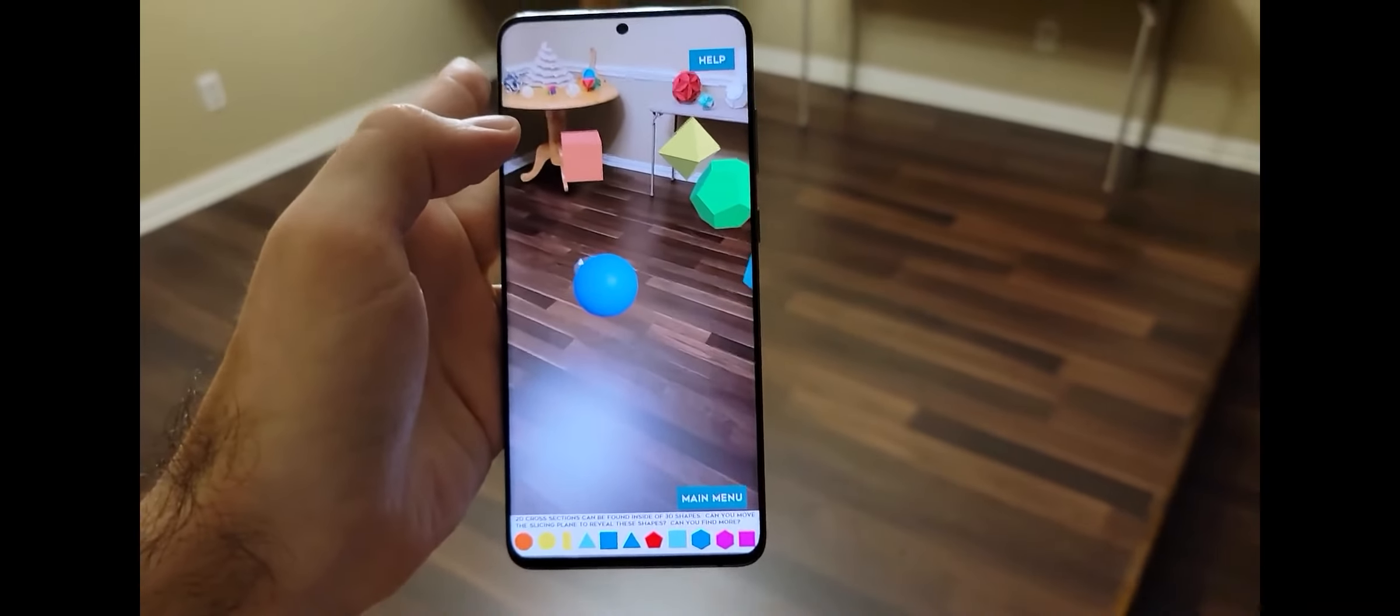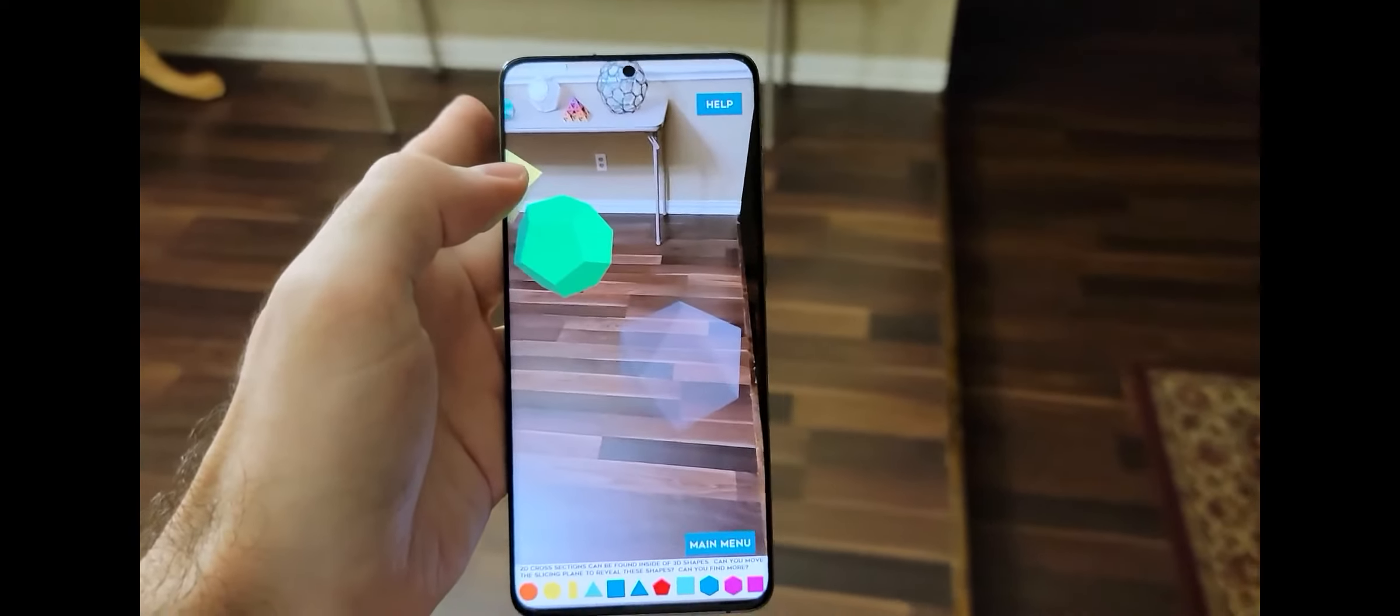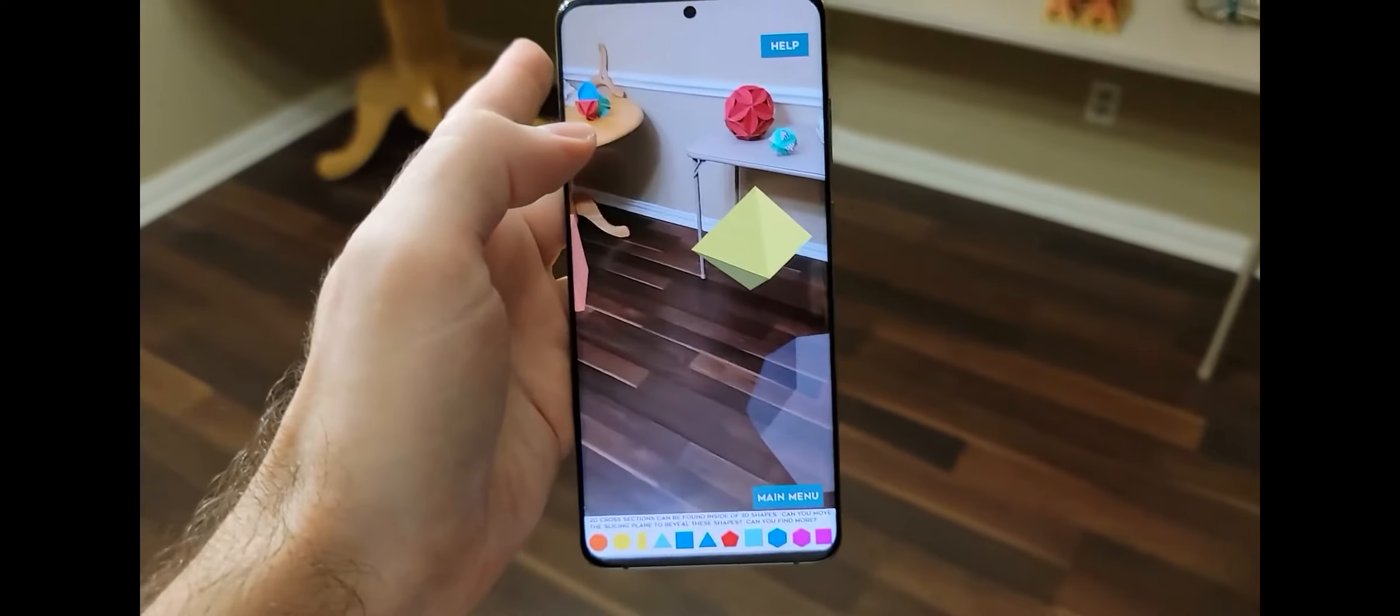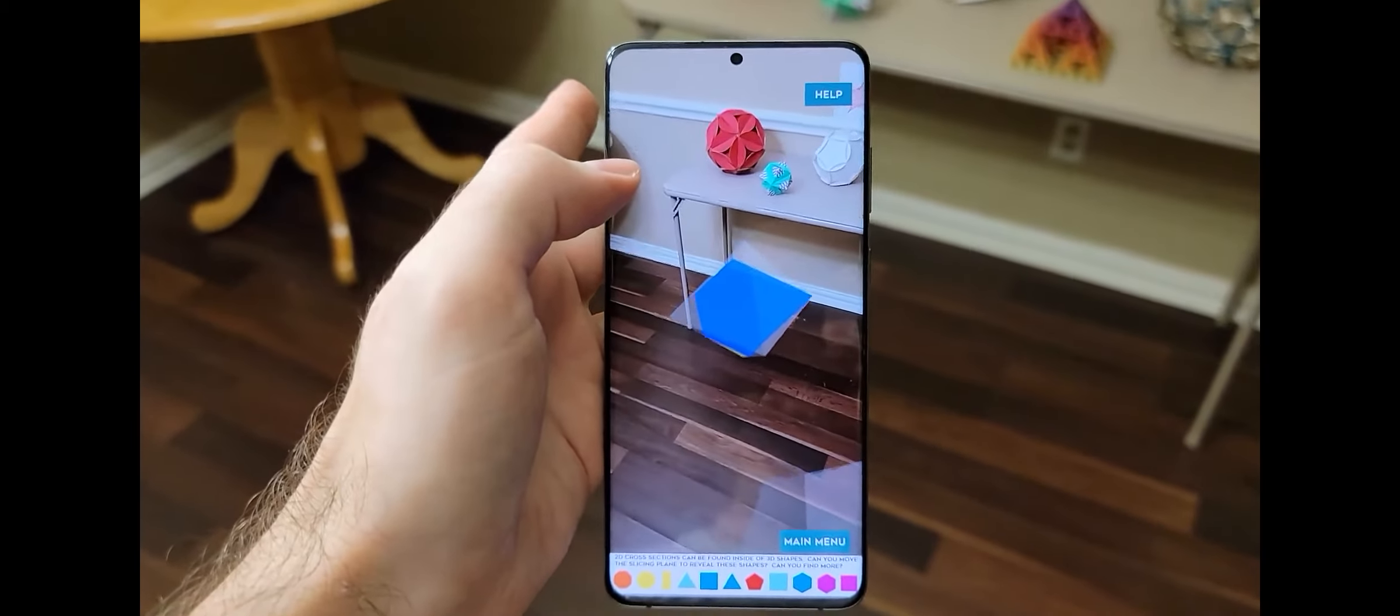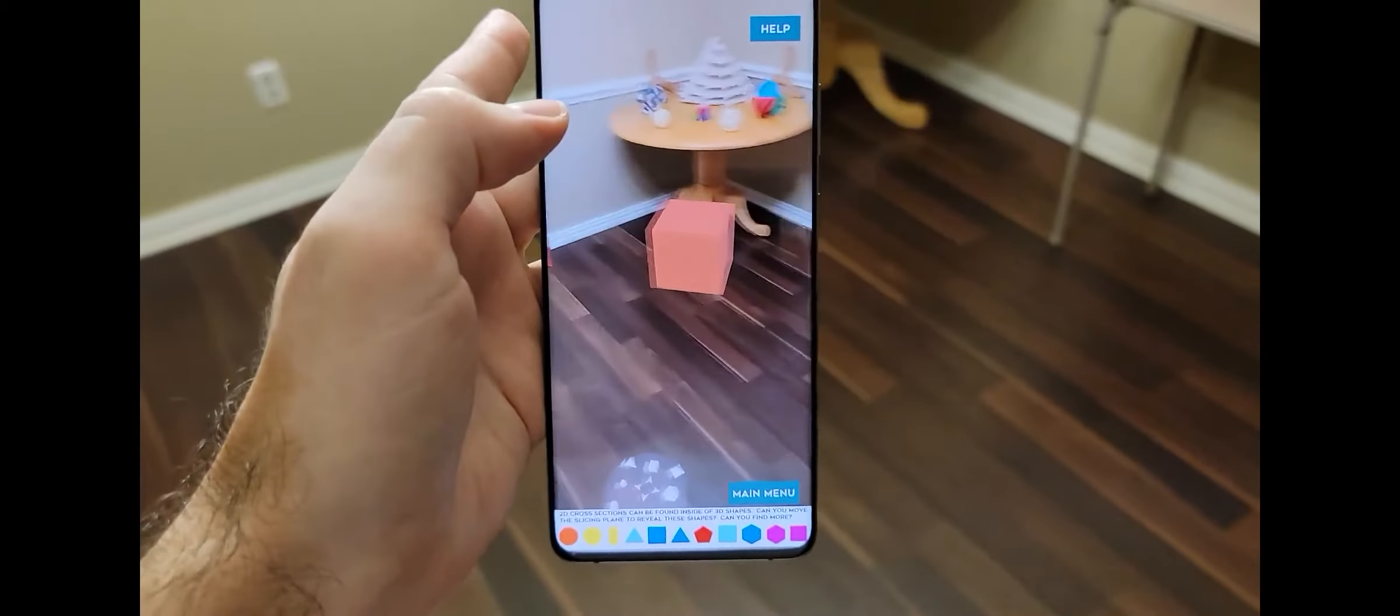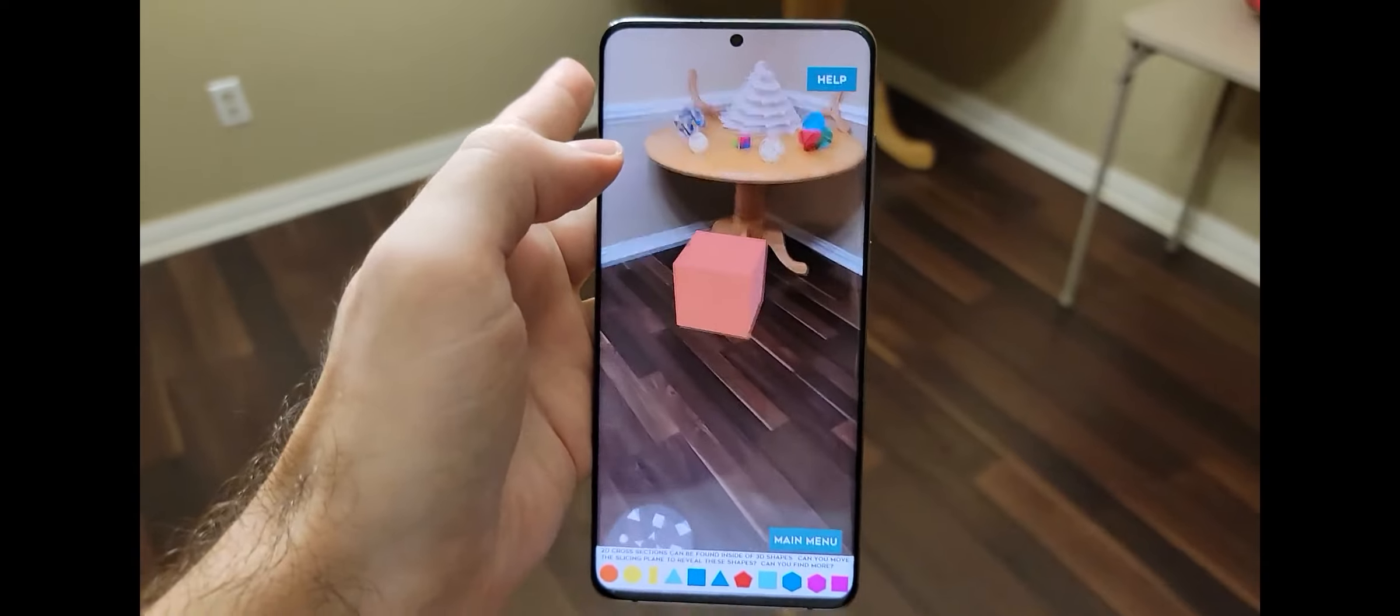You'll notice that as we get close to any of these objects, there's a slicing plane that goes through each of the objects. The slicing plane hovers in front of our camera, of our real world device. Let's see how we can discover some 2D objects inside of these 3D ones.